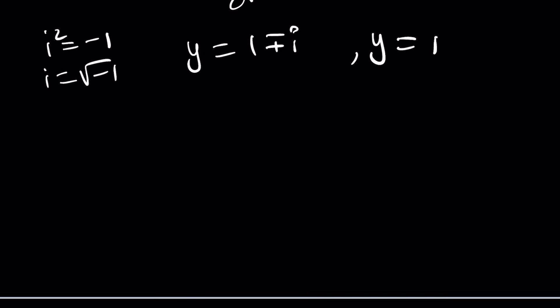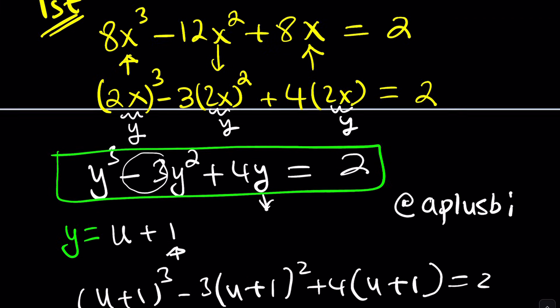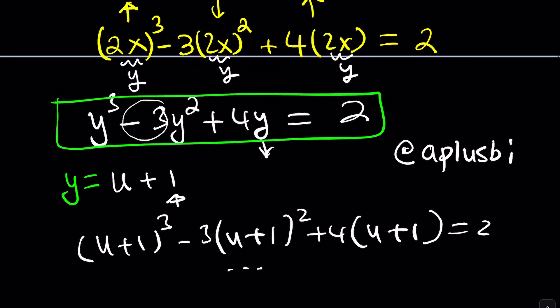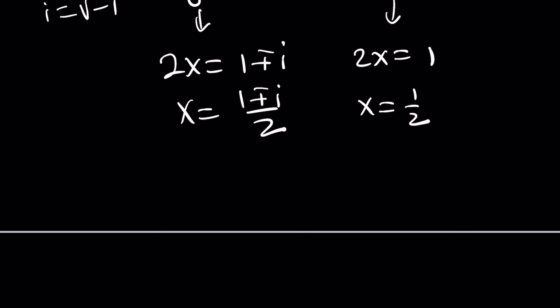But how do you go from this to the x world? Let's go back to our notes. Hopefully, we took good notes. Y is equal to 2x. Then we can just replace y with 2x. If we do, we get 2x = 1 ± i, x = (1 ± i)/2. And from here, 2x = 1, x = 1/2. So we have one real solution, two complex conjugates, two complex solutions. That can happen.